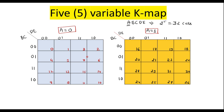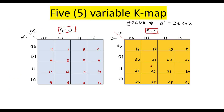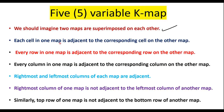So in this Kmap, variable a is equal to 0, and in this Kmap, variable a is equal to 1. Now we will see how to do the grouping. We should imagine that the 2 maps are superimposed on each other — that is, the map for a equal to 1 is superimposed on a equal to 0. Each cell in one map is adjacent to the corresponding cell on the other map.